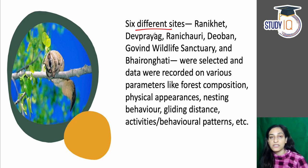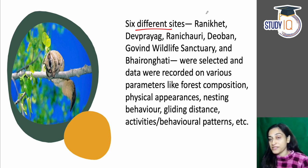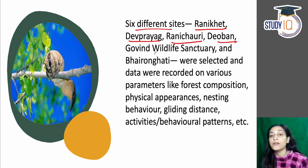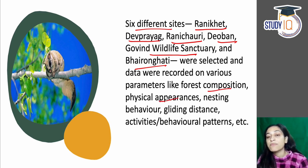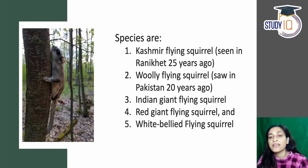Different sites were observed, including Rani Khet, Dev Praag, Rani Chauri, Dioban, Govind Wildlife Sanctuary, and Bhaerar Ghaati. Different parameters were studied: forest composition, physical appearance, nesting behavior, and other factors. Behavior patterns were also observed.